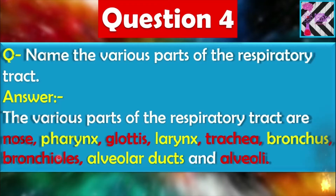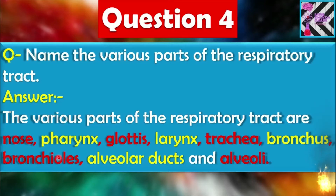You should remember this in sequence. Don't write nose, then alveoli, then pharynx and alveolar ducts — that would be the wrong method. We are entering from the nose, then reaching the pharynx, then the glottis, and finally the alveoli inside the lungs. So we should learn the same sequence. According to the diagram, you can learn this easily.